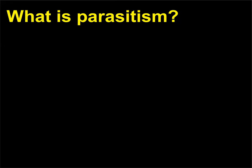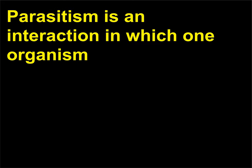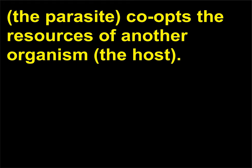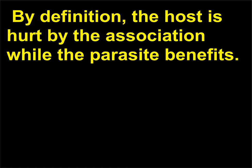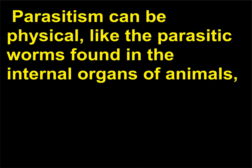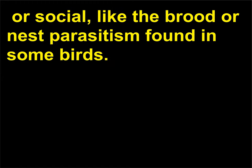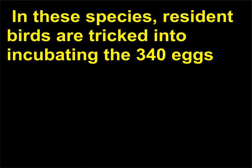What is parasitism? Parasitism is an interaction in which one organism — the parasite — co-opts the resources of another organism, the host. By definition, the host is hurt by the association while the parasite benefits. Parasitism can be physical, like the parasitic worms found in the internal organs of animals, or social, like the brood or nest parasitism found in some birds, in which resident birds are tricked into incubating the eggs and raising the chicks of interlopers.